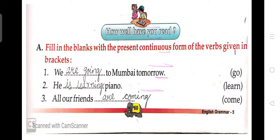Good morning students, hope you all are doing well. Today we will do exercises from Chapter 11, the present continuous tense. As you know, we have completed the chapter — the explanation part is done. Today we will do exercises. I hope you all have done your homework, so now let's check your answers. First we will begin with Exercise A, which is given on page number 60. In this exercise you have to fill in the blanks with the present continuous form of the verbs given in the bracket.